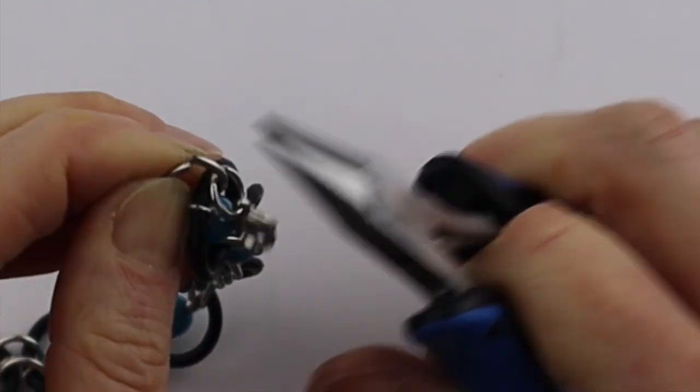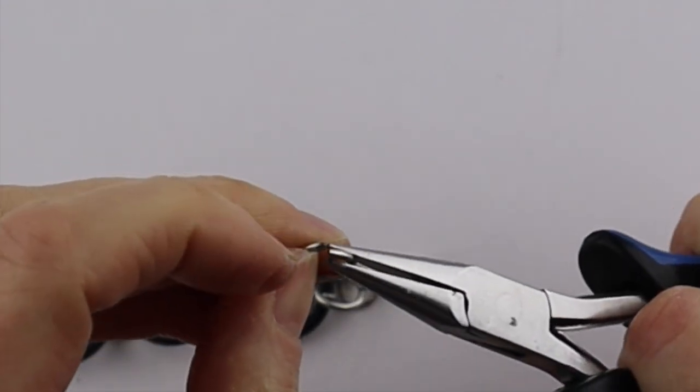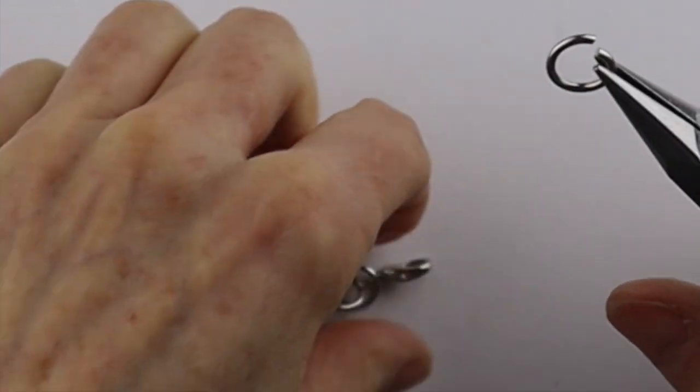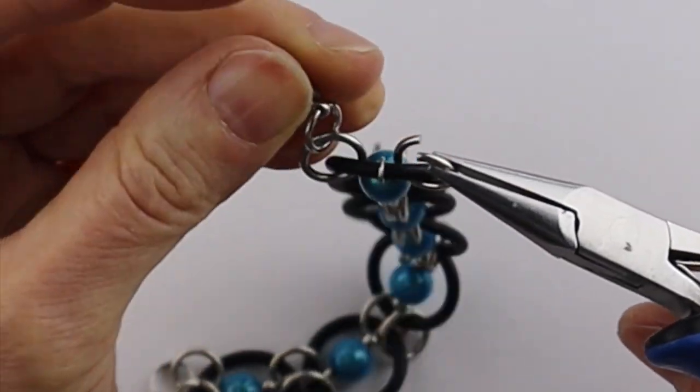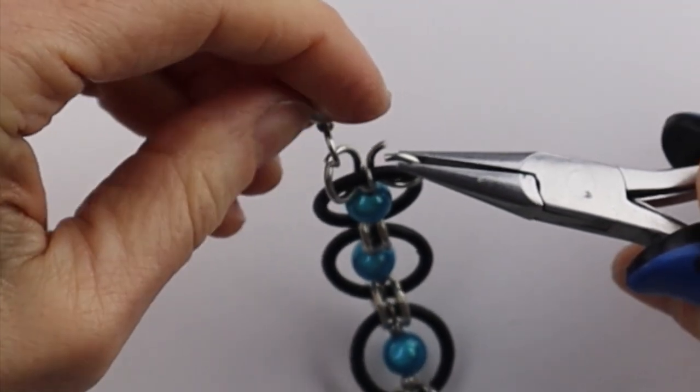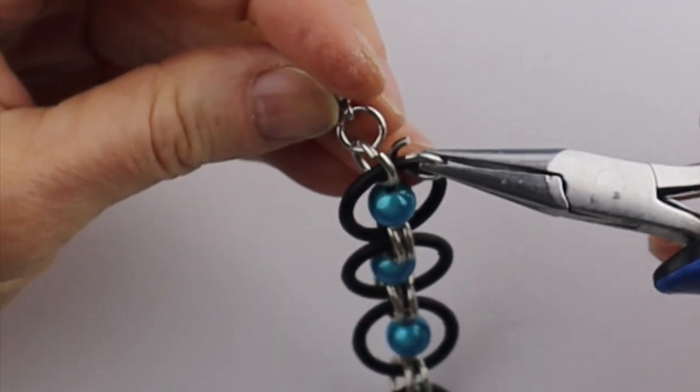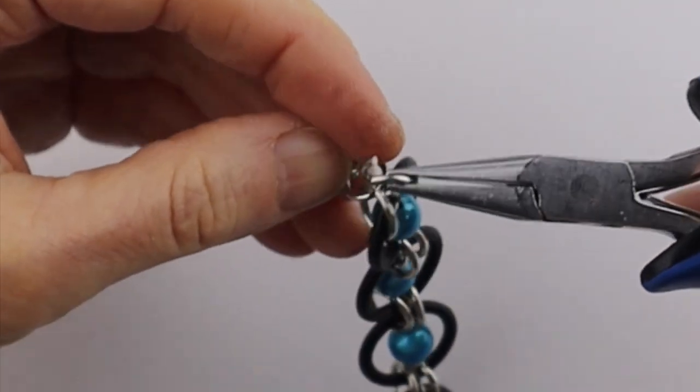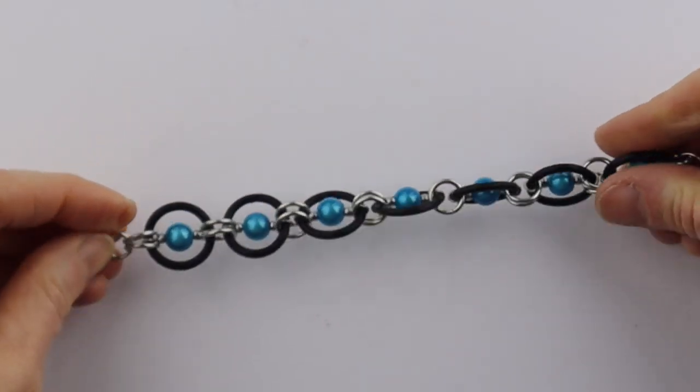Then we want to get another larger jump ring, open it up, and put it to the other side of where that bead is. Hold this in a way that it's going to go in the right way. Hold that, bring that up from underneath, and close it up. There you have your bracelet.